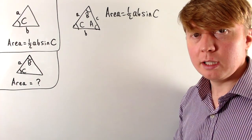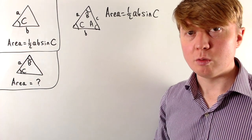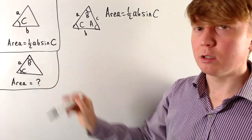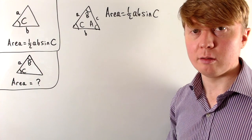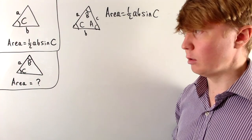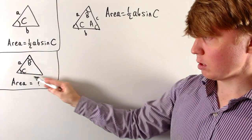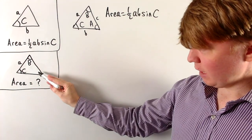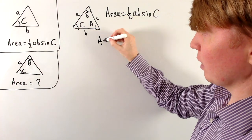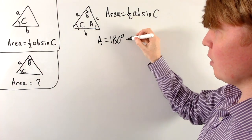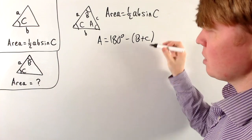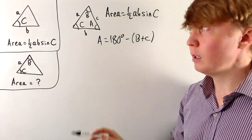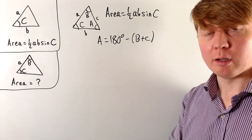Now let's look at a slightly different case. We've got two angles and one side, but these two angles are the ones which touch the side whose length we know. So we have angles A and C with the side between them. What I'd do is: find angle A as 180 minus B plus C, then use the sine rule to calculate side length b, and use our original area formula.